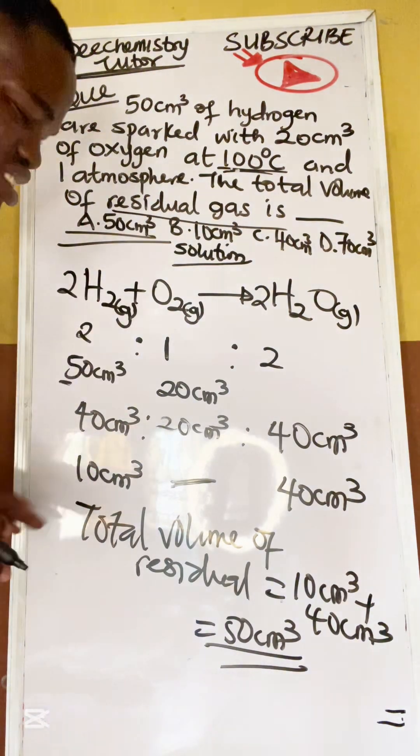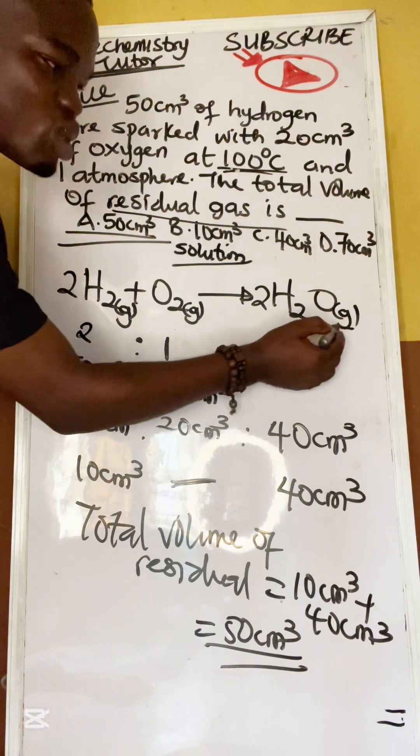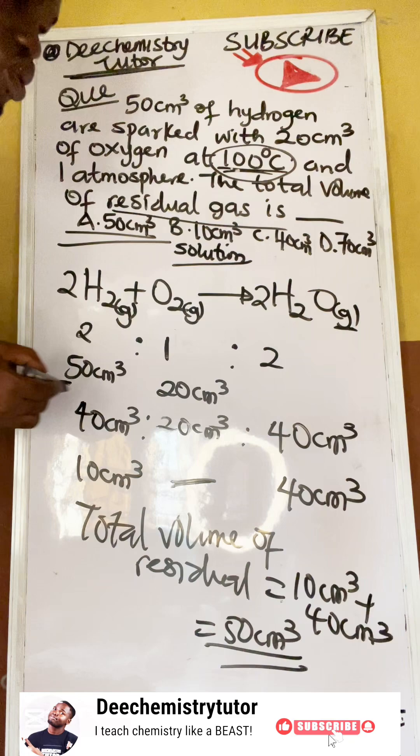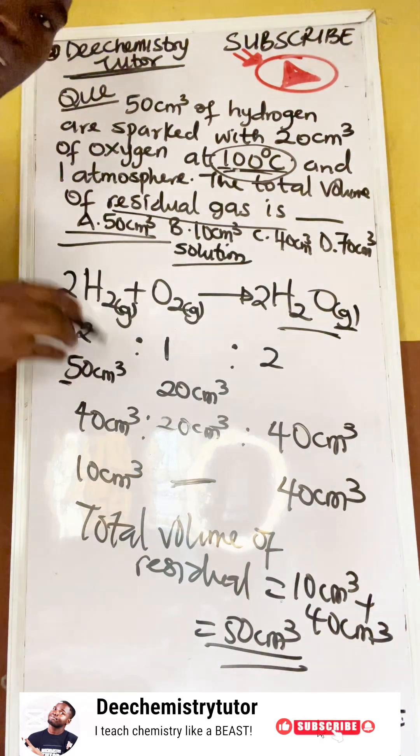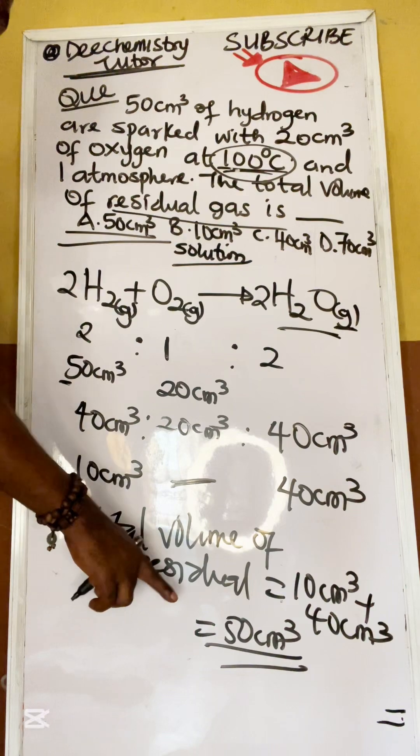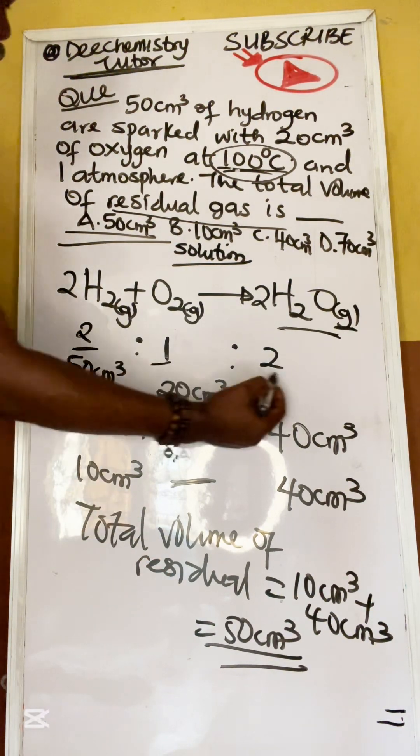So if you know this, you are good to go with residual gas. But what is important? This must be gas. And that's why they said it is 100 degrees Celsius. So you are saying, ah, this is steam, so it is in the gaseous state. Because it is not in the gaseous state, you can't get 50 cm³. Please take note. You already know that this is two to one to two.